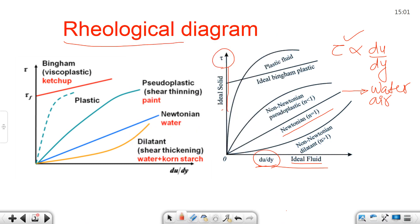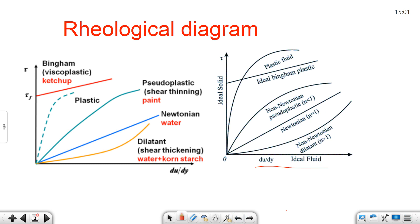Now what is the meaning of ideal fluid? Ideal fluid is represented on the x-axis, meaning there is no y-axis component. That means the fluid for which viscosity is zero — mu equals 0. Ideally, it is not possible to have any real-life fluid for which mu is 0; there is no existence of such a fluid. So this is an ideal concept. When viscosity is 0, that fluid is called an ideal fluid — meaning no shear stress, tau equals 0.